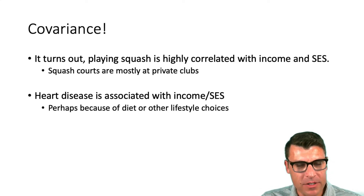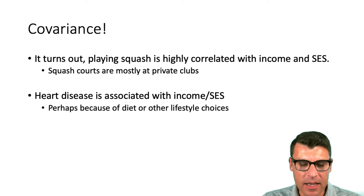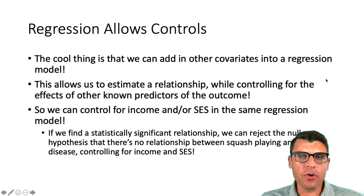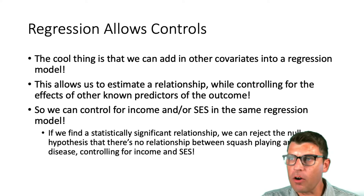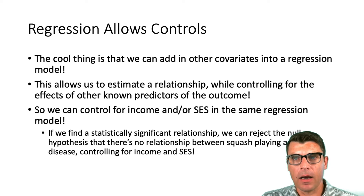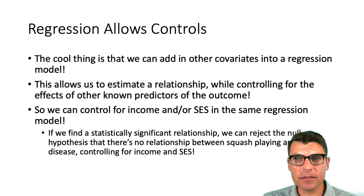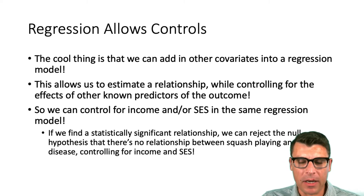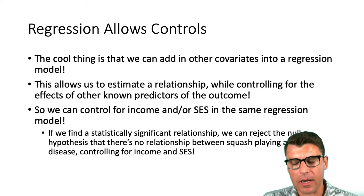That's pretty important because a lot of the things we're interested in understanding — about organizations, about people in organizations — are highly correlated with other measures that might themselves be associated with the outcome of interest. We have to control for that effect to do these analyses correctly. So regression allows us to add covariates, estimate a relationship while controlling for known predictors, and if we find a statistically significant relationship after controlling for income or SES, we can reject the null hypothesis between playing squash and heart disease.